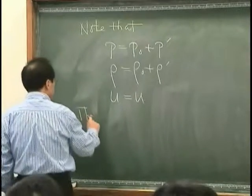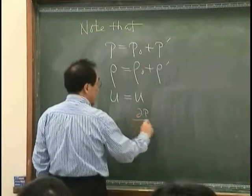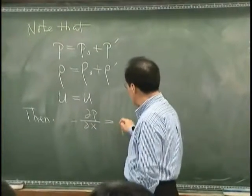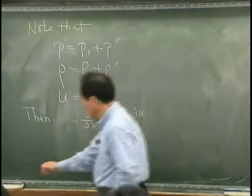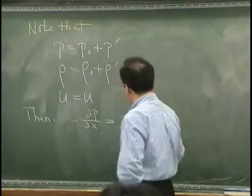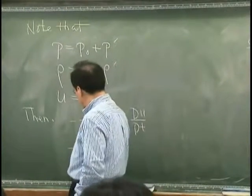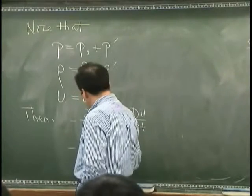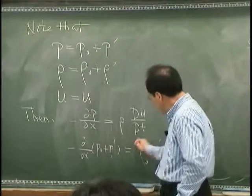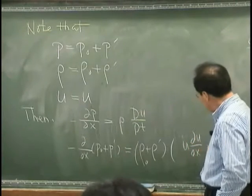Then the Euler equation says that the pressure gradient in space has to be balanced by... this should be minus dP/dx of P zero plus P prime. And the rho has to be rho zero plus rho prime. And du/dt is U du/dx plus du/dt.